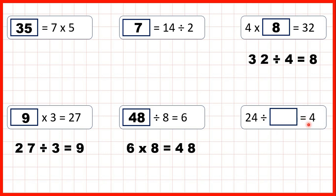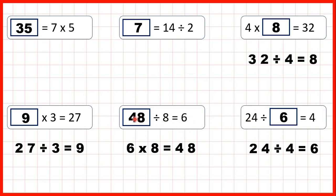And finally, 24 divided by something equals 4. Here it's the second number — the divisor — that's missing. If the divisor is missing, we still use division to find our missing number. We can work out 24 divided by 4. That's 6, because 6 times 4 is 24, so our missing number is 6. So notice: when it's multiplication, we can always use division to find our missing number. But if we have a missing number in a division problem, it depends on whether it's the first or second number that's missing. If it's the first number, we can use multiplication. If it's the divisor, we still use division.